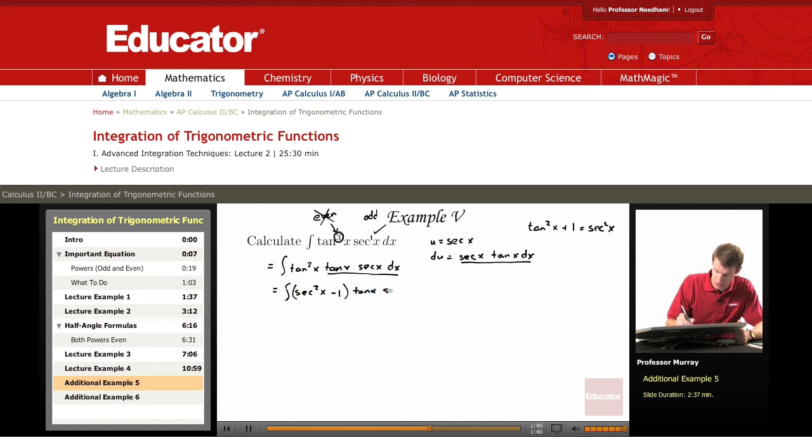Tan x secant x dx. That's just du. And all of a sudden, we have a really easy integral. So we can integrate that quickly to be u cubed over 3 minus u. And then we substitute back into secant cubed x over 3 minus secant x plus a constant.